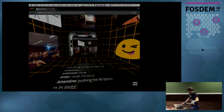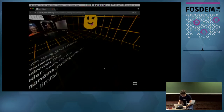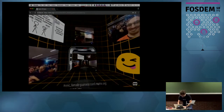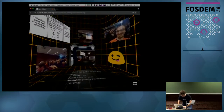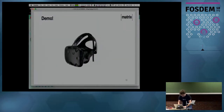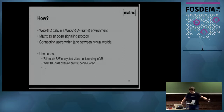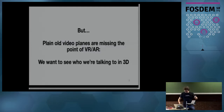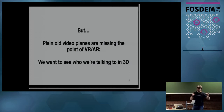Let me show you the much better demo — the 2018 variation. That was WebRTC in A-Frame, Matrix using end-to-end encrypted communications, and it was a full mesh conferencing setup with end-to-end encryption going all the way through. The idea was to show that Matrix is a lot more than instant messaging. But the problem is those were just plain old video planes — putting a 2D video conference into a 3D world is pretty boring. We want to see who we're talking to in 3D.